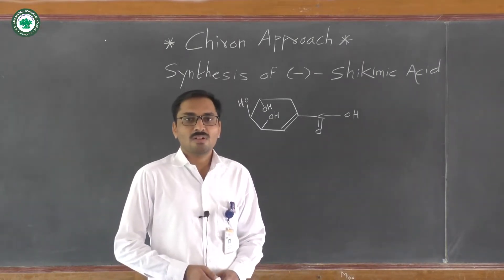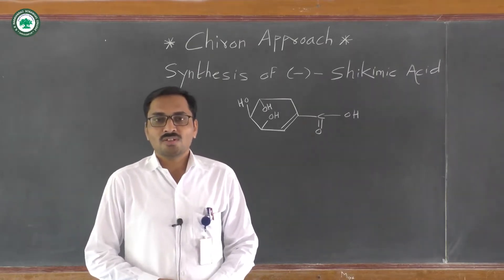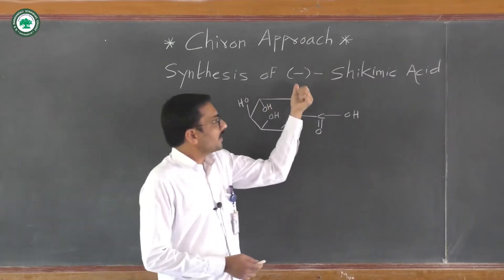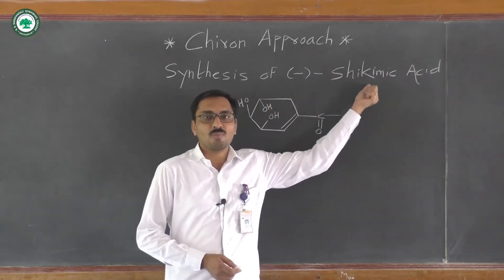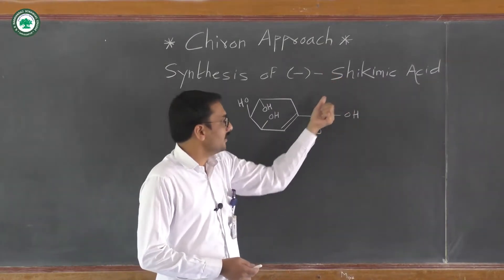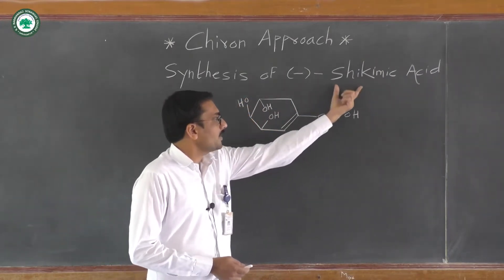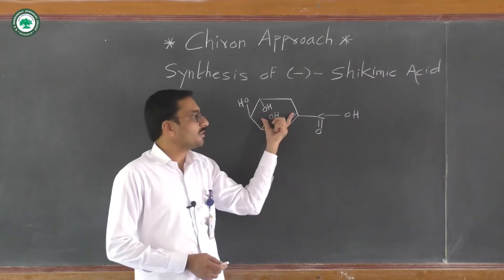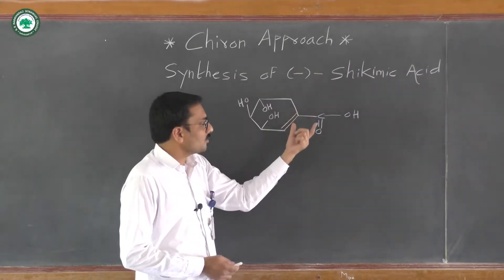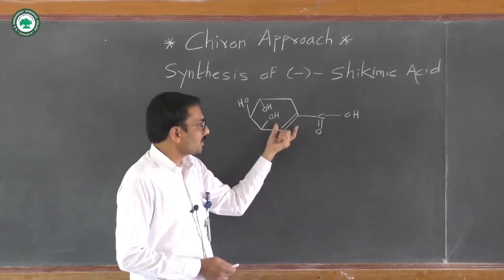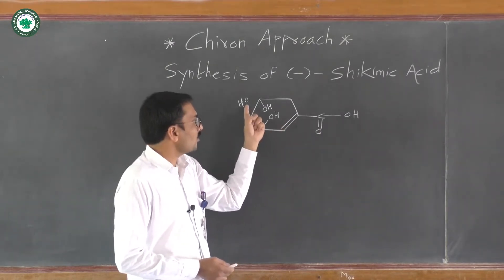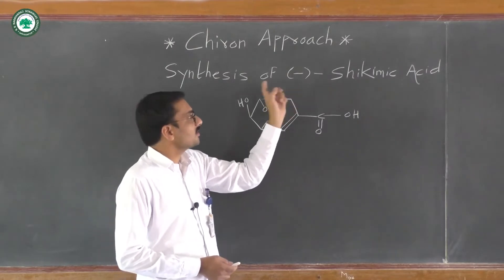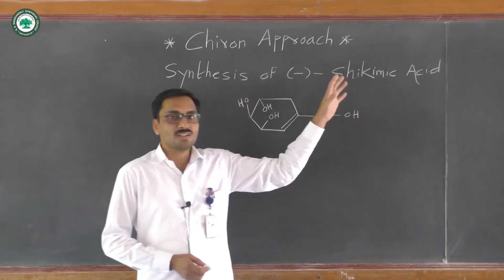In the previous lecture, we learned the synthesis of pentinomycin molecule using the concept of the Chiron approach. In this lecture, we will see the synthesis of minus shikimic acid molecule using the concept of the Chiron approach. The structure of minus shikimic acid consists of one six-membered ring attached with different functional groups, including one carboxylic acid, one double bond inside the ring, and three hydroxyl groups.